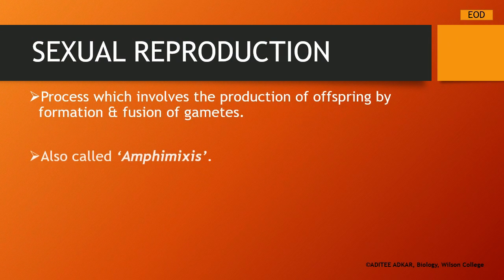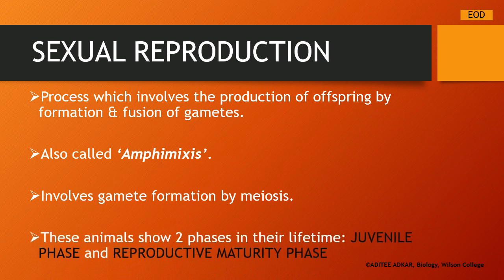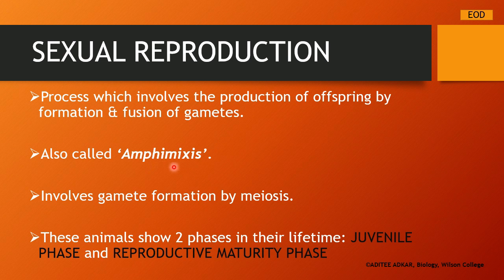Let us now come to the topic of sexual reproduction. As the name suggests, sexual reproduction involves both the sexes and the production of gametes. It is the process which involves the production of offspring by formation and fusion of gametes. This process also has another name: amphimixis — 'amphi' meaning both and 'mixis' meaning mixing. So the male and female gametes are mixing or fusing, which is why it is called amphimixis.